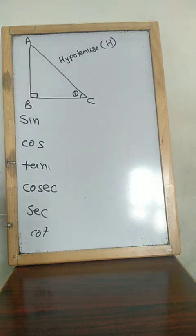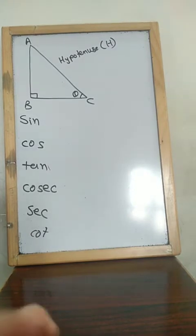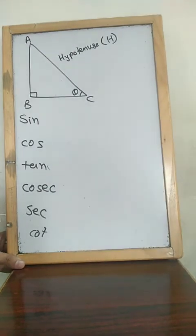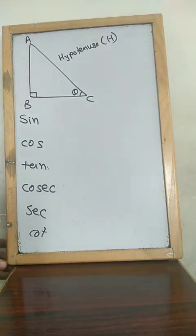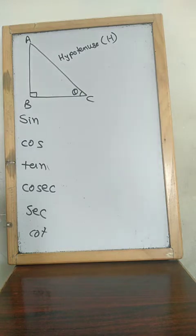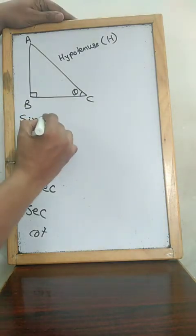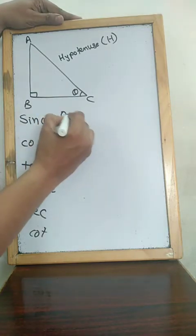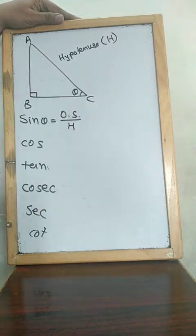What I am explaining today is very important. If this goes into your mind, you will have no difficulty in this chapter. You can ask anything — how, why, where, what — anytime. The formula for sin theta is opposite side upon hypotenuse.